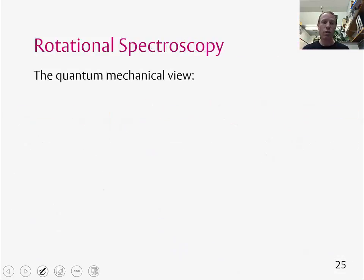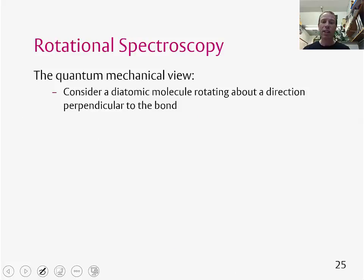That's a classical view. Let's now go to a quantum mechanical view. Again, we can think about a diatomic molecule rotating about a direction perpendicular to the bond, something like this.